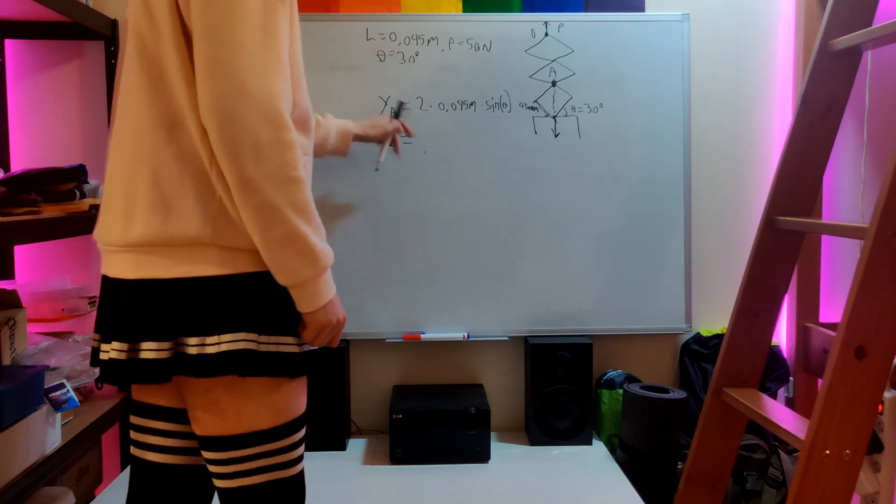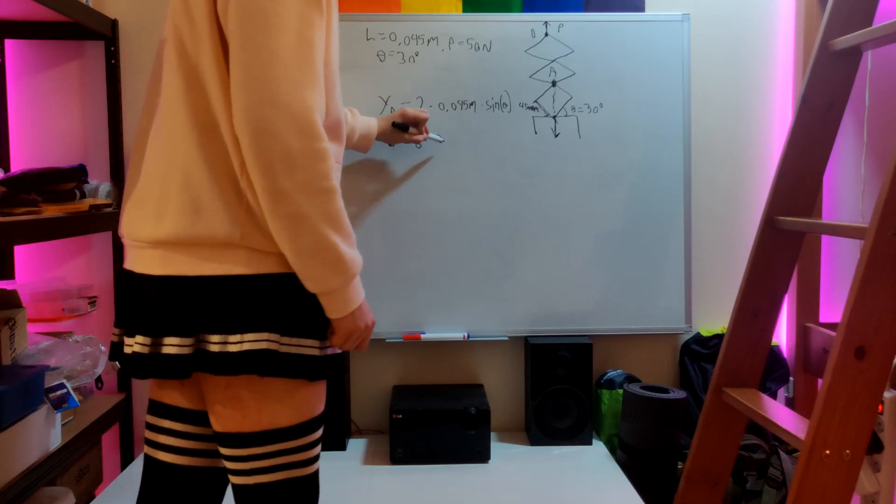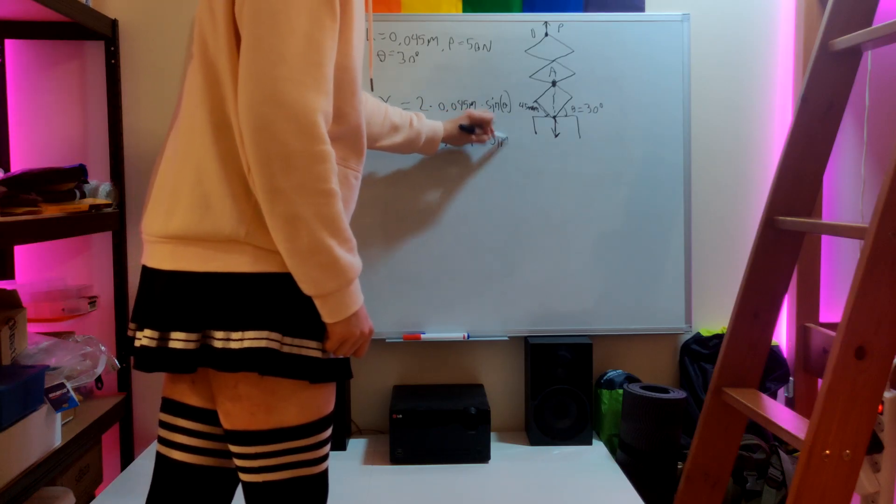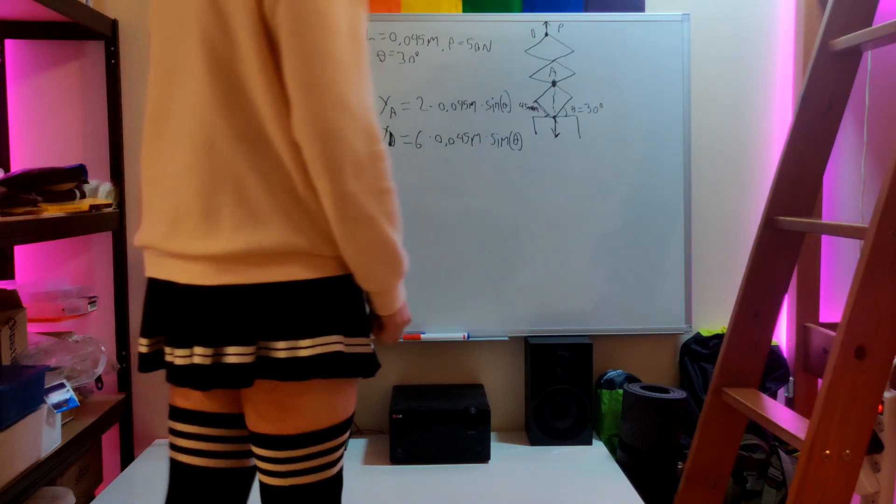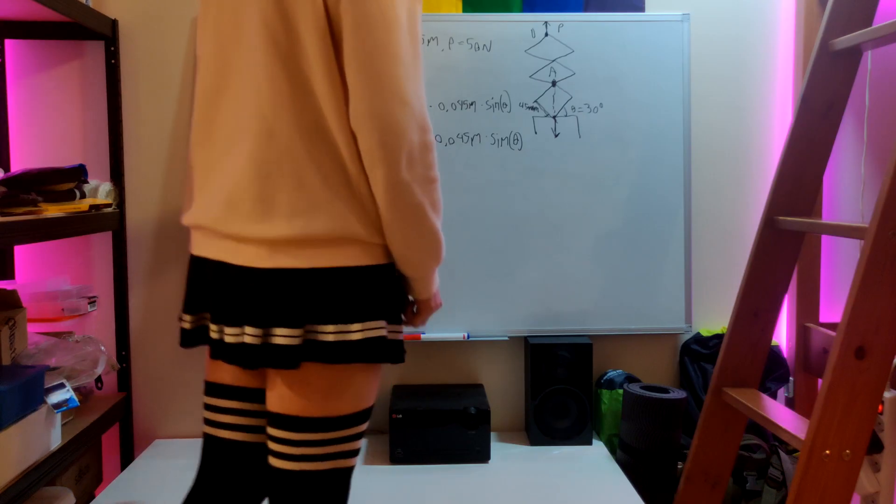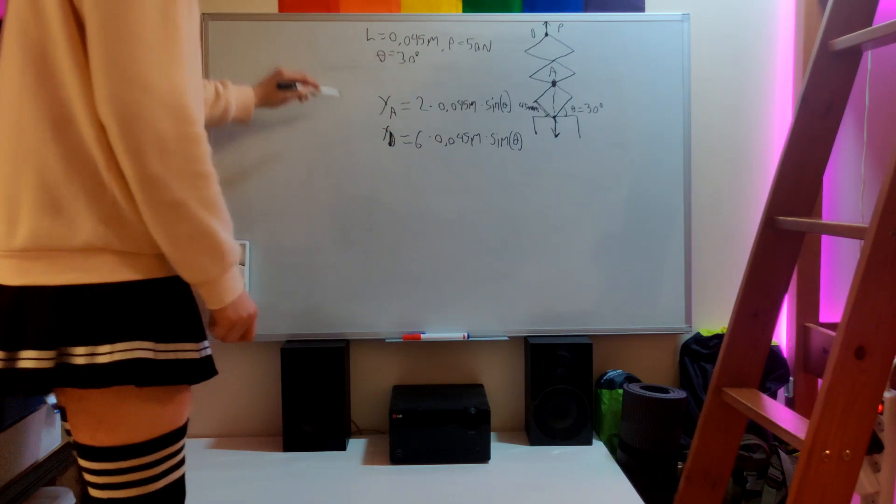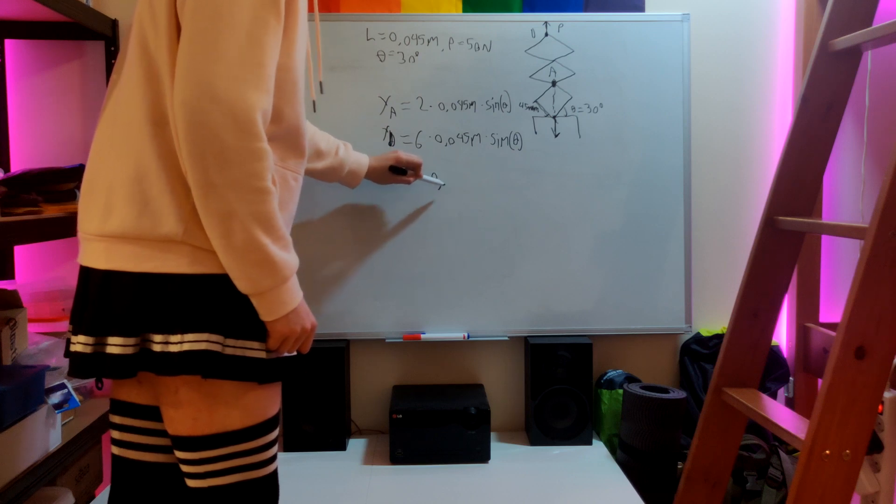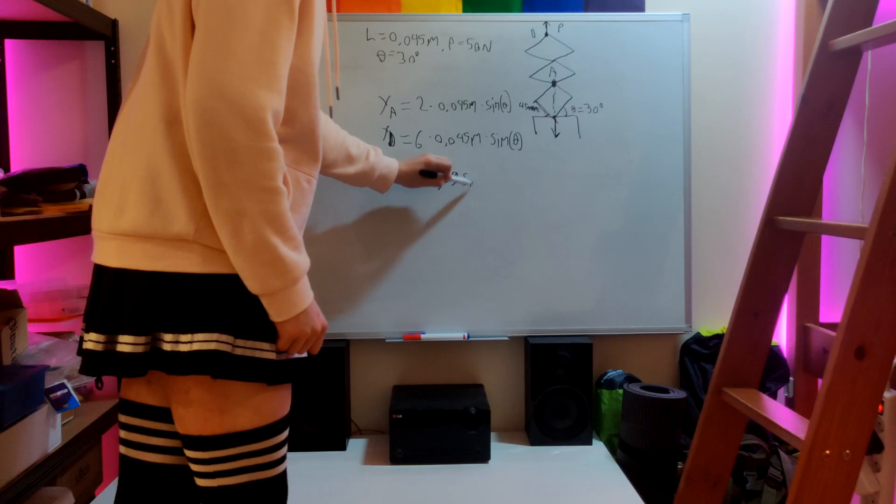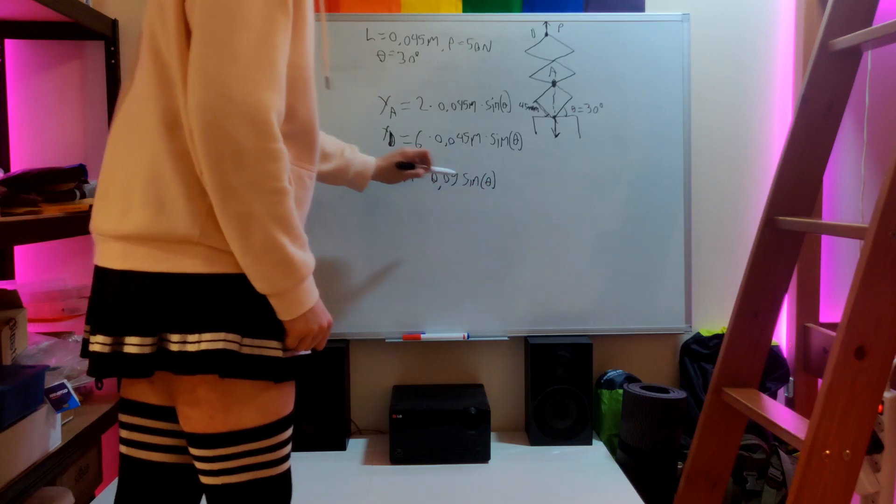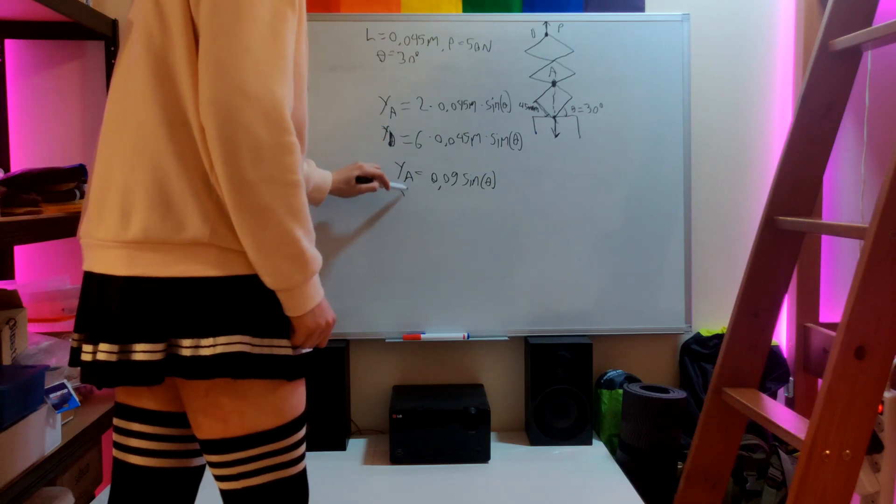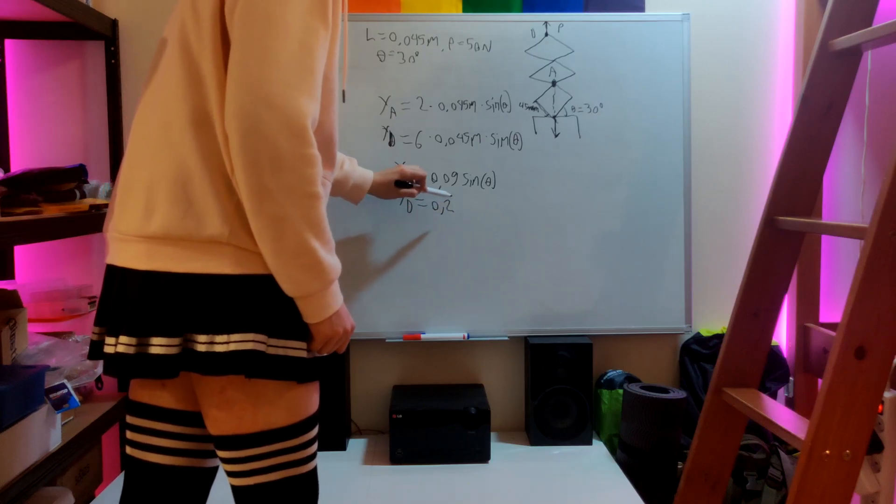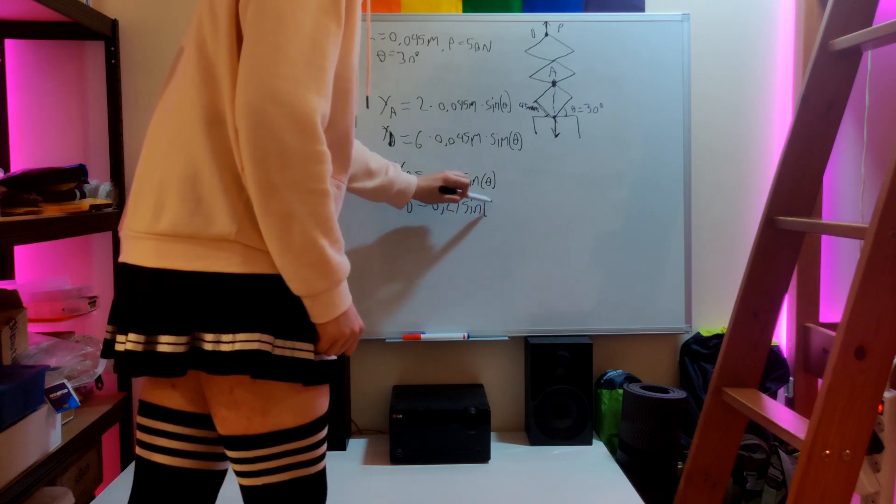I will put it a bit to the side: 6 times 0.045 meters times sine of theta. And when we solve this, we get YA equals 0.09 sine of theta, and for YD we get 0.27 sine of theta.